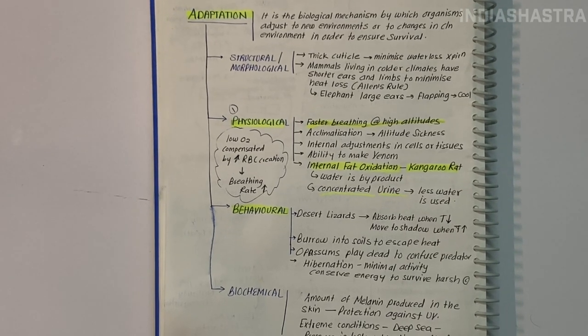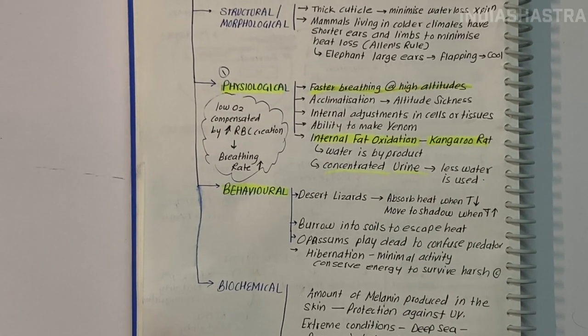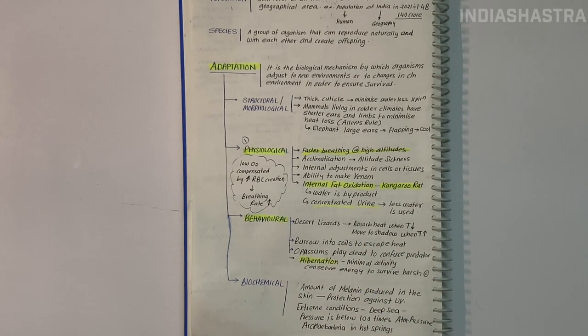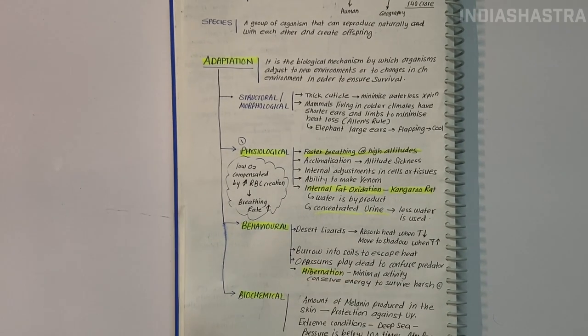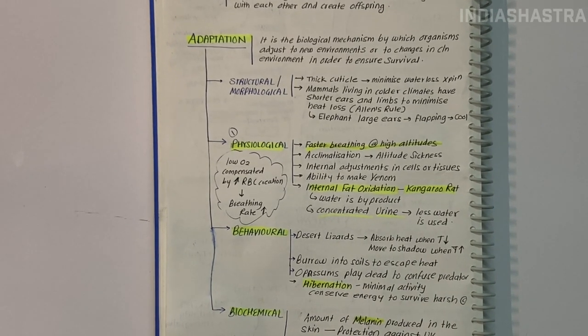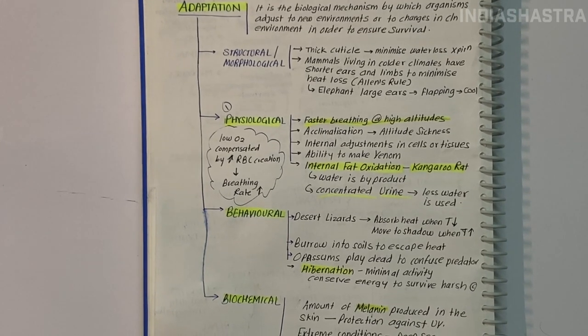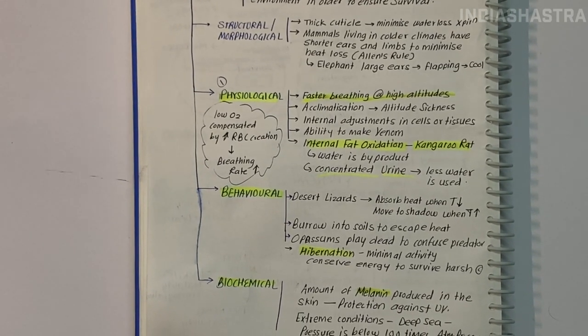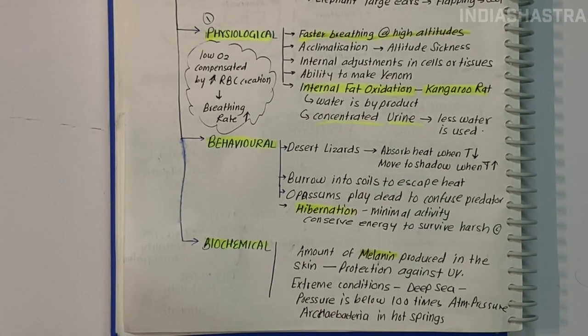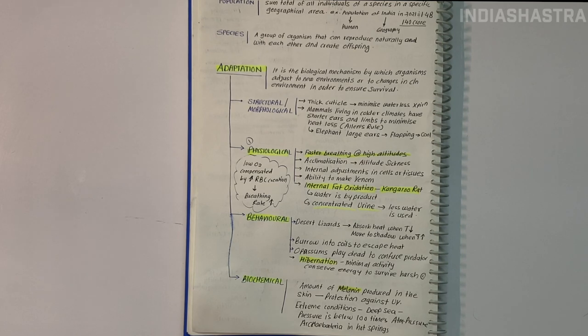Behavioral adaptations are changes in normal behavior to cope with situations - like bear hibernating or birds migrating. Biochemical adaptations involve changes to structure, function, regulation and integration of biological molecules. UV rays are bad for humans. Melanin acts as a protective biological shield against ultraviolet radiation, helping prevent sunburn damage that could cause DNA changes and malignant skin cancers.